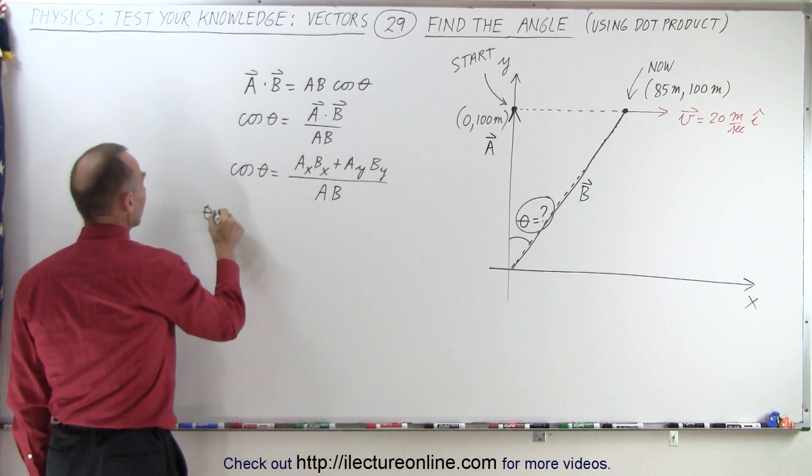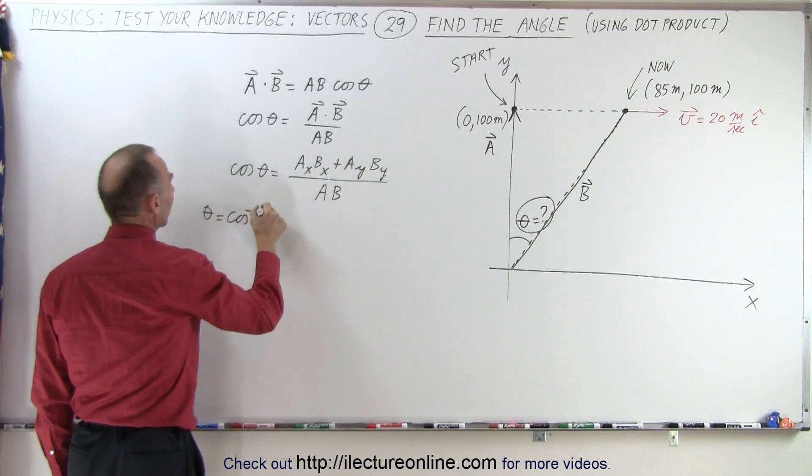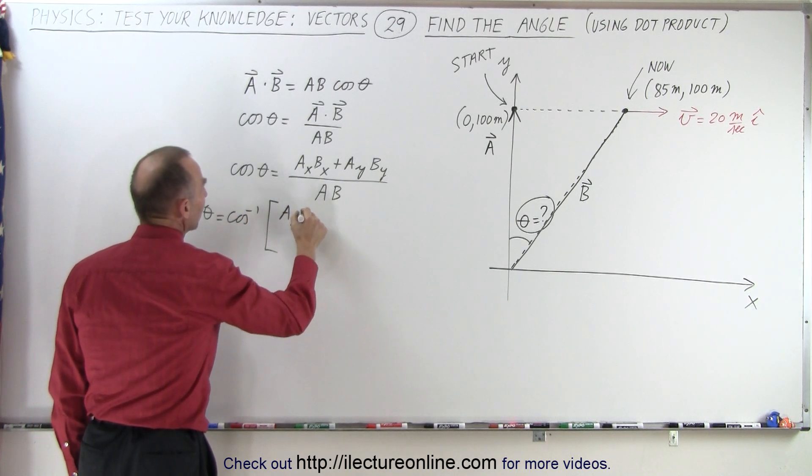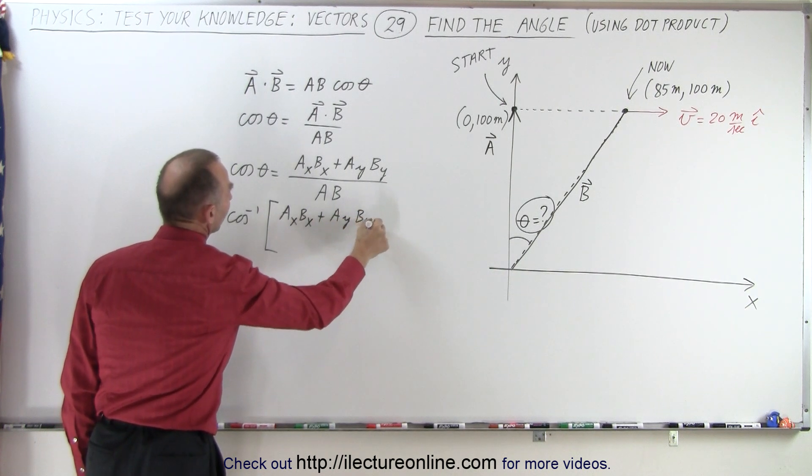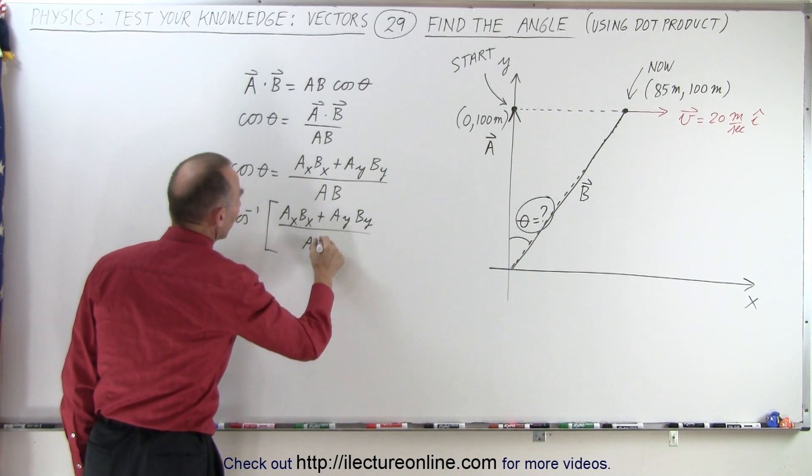And therefore, theta becomes the inverse cosine of the quantity a_x b_x plus a_y b_y, all divided by the magnitude of a times the magnitude of b.